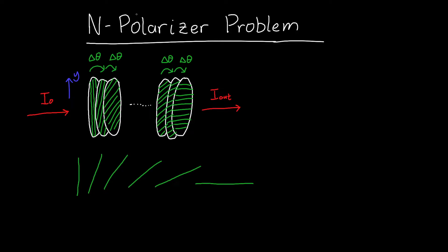In this video, we're going to solve the n-polarizer problem. In this problem, we've got input light with an intensity I₀, and we want to know what the intensity of the output light is.